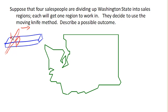Then they keep moving the knife along, and as soon as it gets to the next place where somebody feels the piece to the left of it is worth a fair share, they yell 'stop' and they get the next piece. And so on down the line — whoever's left at the end gets the remaining cake, which will be worth a fair share to them because none of the pieces before that had been.